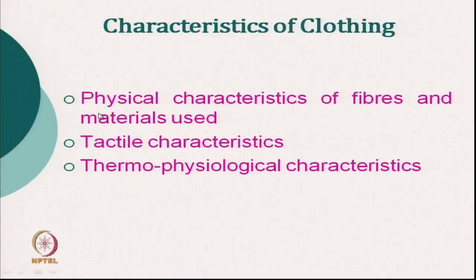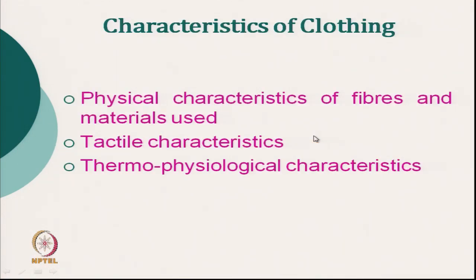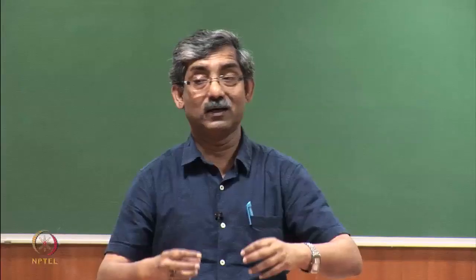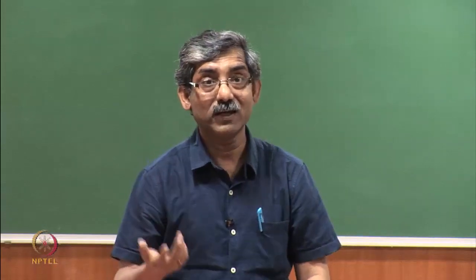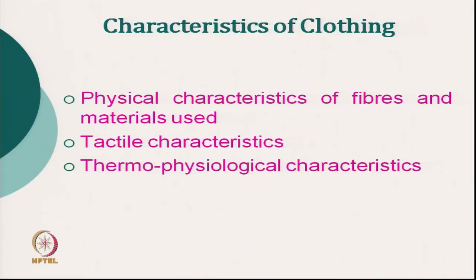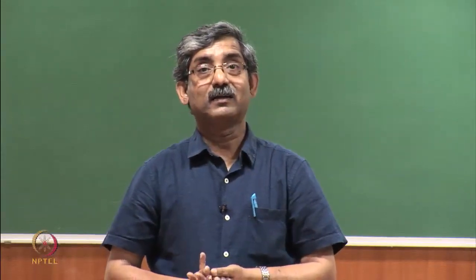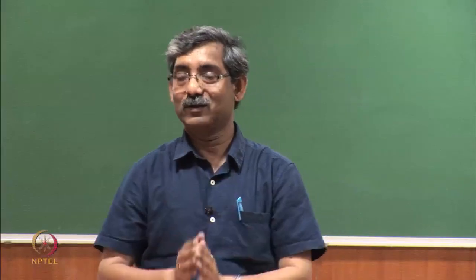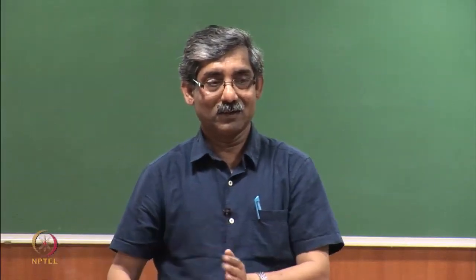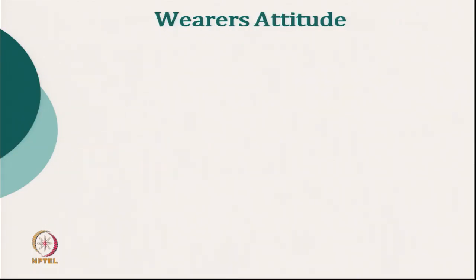Characteristics of clothing depend on the physical characteristics of the fiber and material used. As discussed, if we want high moisture absorption we select a particular fiber, material, yarn, and fabric. Tactile characteristics — touch-wise it gives good feel — and thermophysiological characteristics are all related to clothing as material. These are controllable. What we cannot control is the wearer's attitude — it is dynamic, it changes with time and fashion.